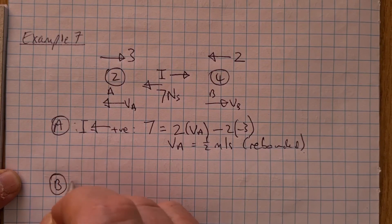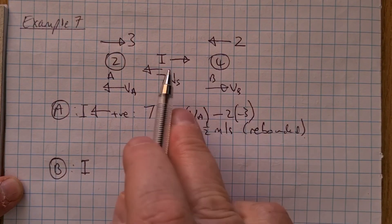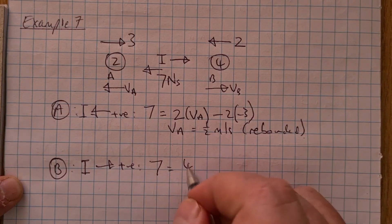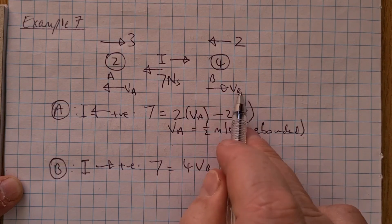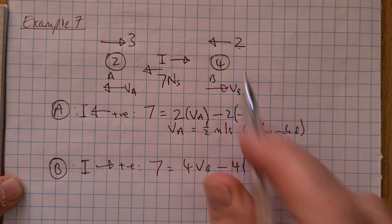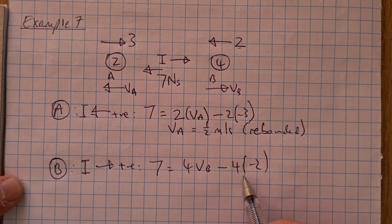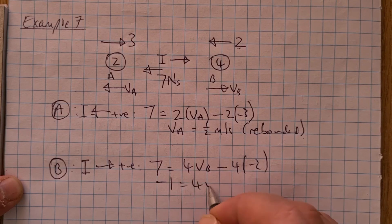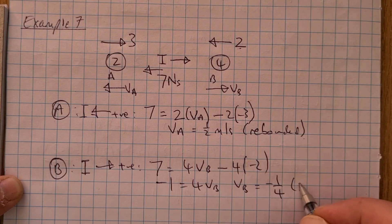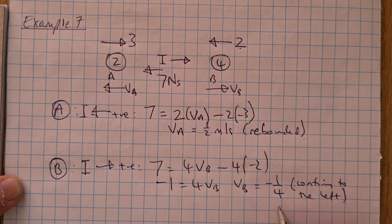Looking at particle B, the impulse of A on B is 7 Newton seconds in the stated direction. So 7 = 4V_B − 4 × (−2), giving 7 = 4V_B + 8, so 4V_B = −1 and V_B = −¼ m/s. B is continuing to the left — it has not rebounded.